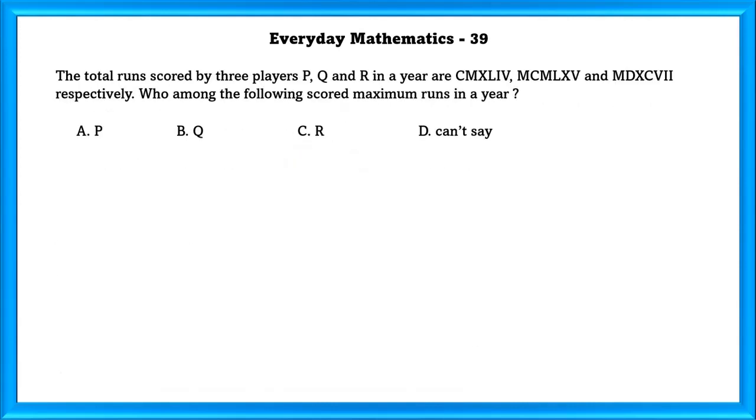Everyday Mathematics Question Number 39: The total runs scored by three players P, Q and R in a year are given in Roman numbers respectively. Who among the following scored maximum runs in a year?